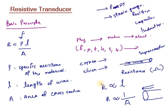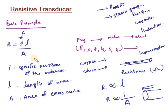So this is the basic principle: the resistance of the material is directly proportional to the length of the wire used and inversely proportional to the area of cross section used. This is the basic principle behind the resistive transducer.